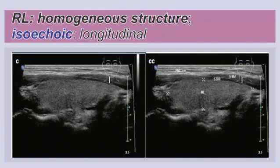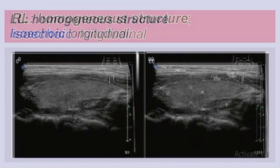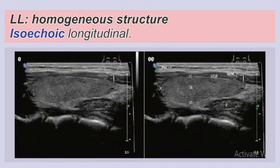This is the right lobe in longitudinal view — it is a homogeneous structure, isoechoic to the submandibular gland. The left lobe in this image is also a homogeneous, isoechoic structure. These are the findings we will see when performing a normal thyroid ultrasound.